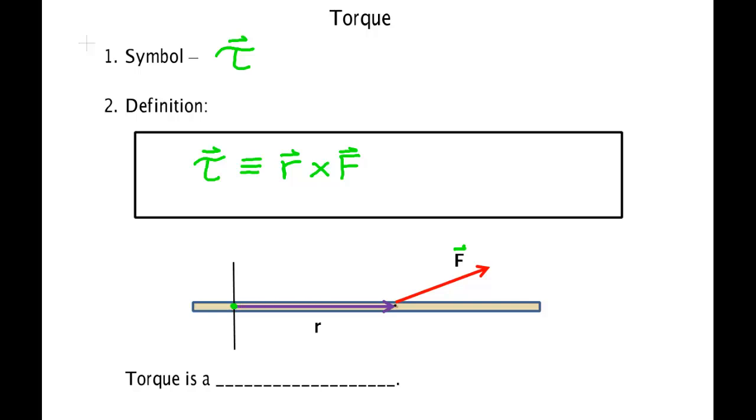Starting from the axis of rotation, you draw an arrow from that point out to where the force is applied. This is the vector r. That vector when multiplied by the vector F produces another vector which is perpendicular to both of the original vectors, and this new vector is called the torque.